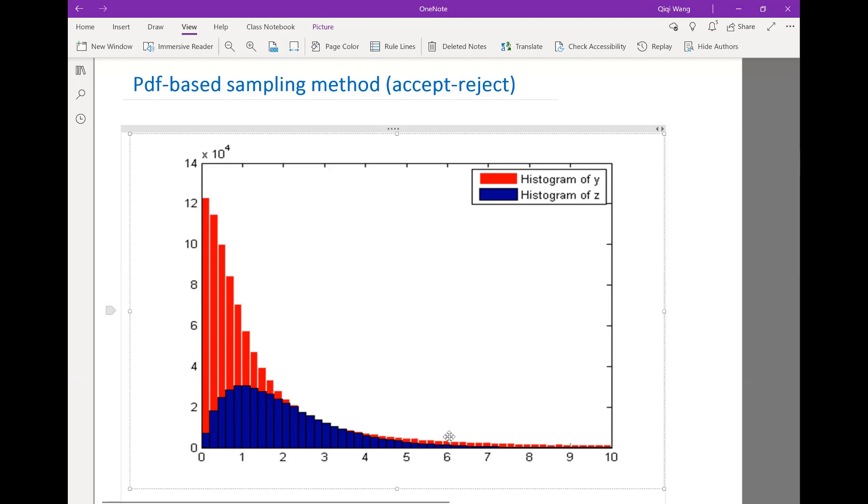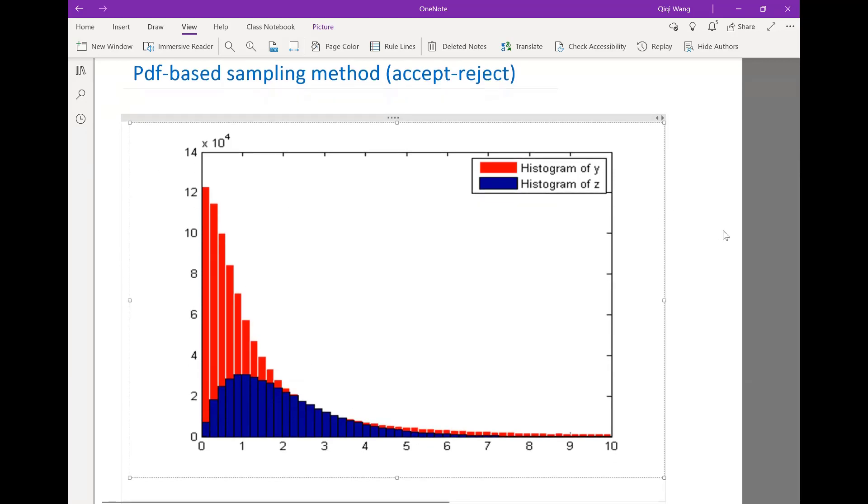That's illustrated in the red histogram. And then we can accept or reject according to the ratio of the red histogram to the blue histogram. We can basically sample another set of y's that are uniform zero to the height of the red, the PDF.